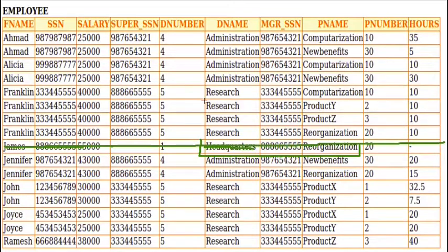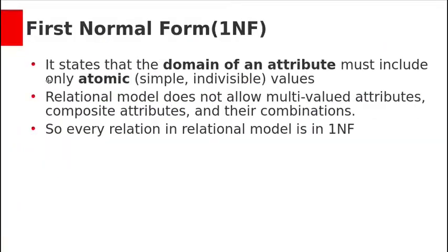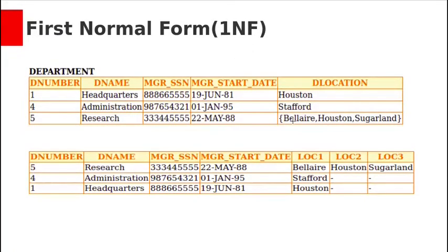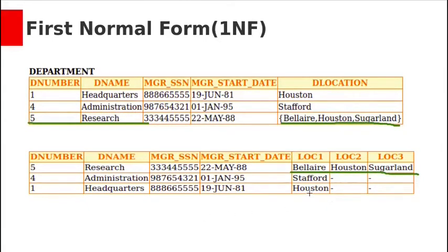We need to normalize this database using normal forms. First Normal Form states that the domain of attributes must include only atomic values — one cell should contain a single value, not multiple values. By default, the relational model does not allow multi-valued or composite attributes, so every relation in the relational model is in 1NF. For example, if a department has locations in 3 places, one approach is to create 3 separate columns: location 1, location 2, location 3.